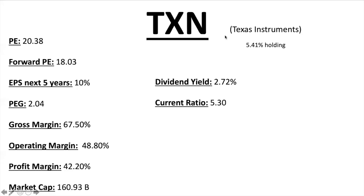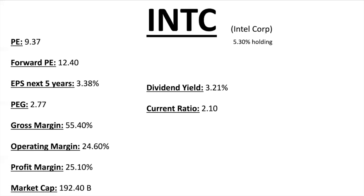Texas Instruments is the third largest holding with 5.41% equity in the ETF. PE ratio 20.38, Forward PE 18.03, EPS for the next five years 10% — a little lower than TSM and NVIDIA but that's okay. PEG of 2.04 — just over two but still decent. Gross margins over 50% and profit margin over 20-25%, so very profitable. Market cap $160.93 billion, dividend nearly 3%, current ratio 5.3 — a lot more assets than liabilities.